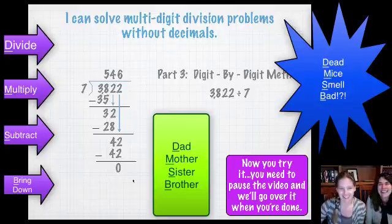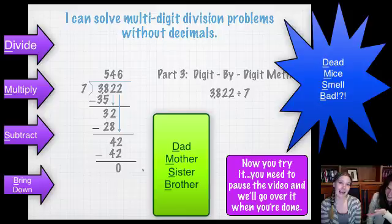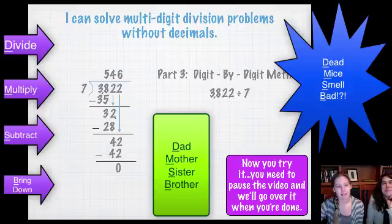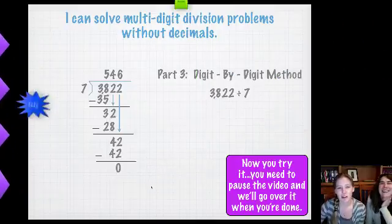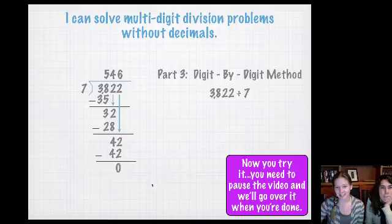There might be a little saying that you've done: dead mice smell bad, just to help remember the steps. I thought of like family, like dad, mother, sister, brother. That sounds much better than dead mice smell bad. Divide, then multiply, subtract, bring down, and then you could even add in Rover the dog for repeat or remainder.